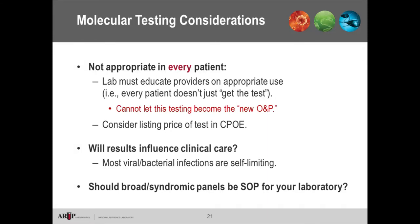Not every patient necessarily needs this test. The lab must steward education to providers on appropriate ordering — unlike O&P and culture, which were ordered broadly because they were inexpensive, these are expensive tests. Not every patient needs them, and patients may receive large bills unnecessarily. One approach to managing cost is displaying the test price in the CPOE system so physicians can see it and consider whether the test is truly warranted.